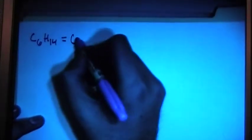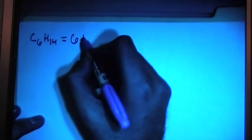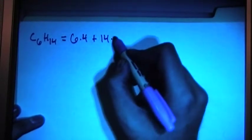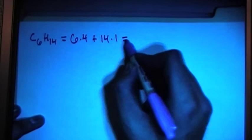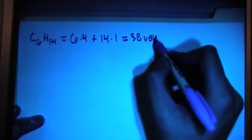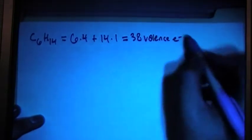We've got C6H14, which is hexane, the chemical formula for hexane. So this gives us 6 carbons times 4 valence for each carbon, plus 14 hydrogens times 1 valence for each hydrogen. So that's going to give us a total of 38 valence electrons.